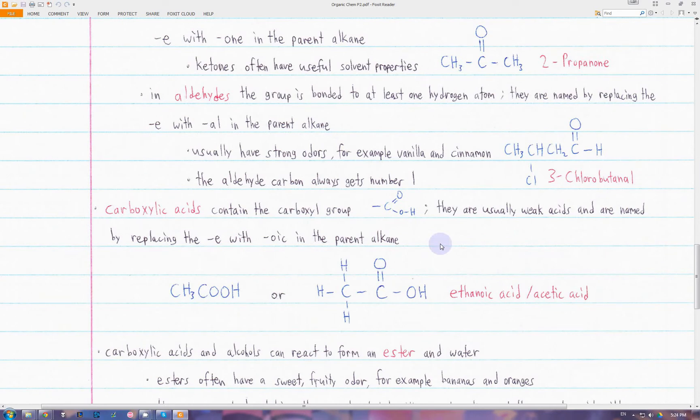Next, we have the carboxylic acids, which contain the carboxyl group: a carbon with a double bond to an oxygen and also bonded to an OH group. These acids are usually weak acids in an aqueous solution, and we name them by replacing the E in the alkane with OIC. A common carboxylic acid is acetic acid. Looking at the structure, it's based on the alkane ethane, so the actual name of this acid is ethanoic acid. Acetic acid is just the common name.